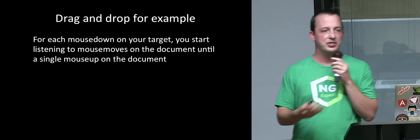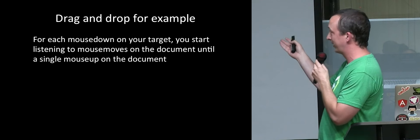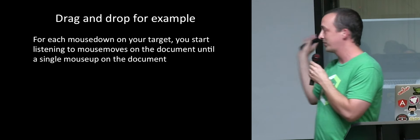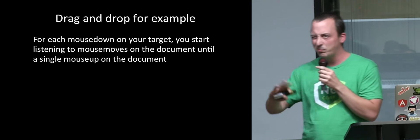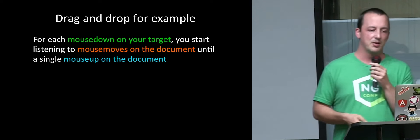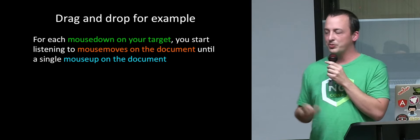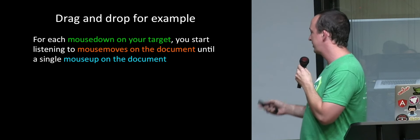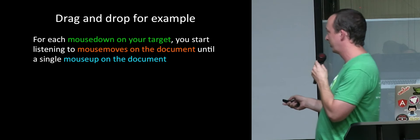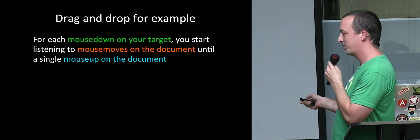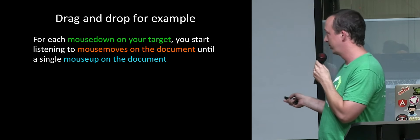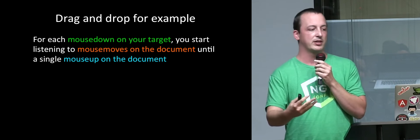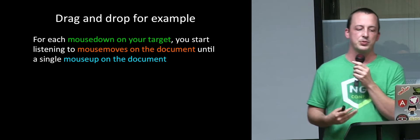So drag-and-drop: for each mouse down on your target, you start listening to mouse moves on the document until a single mouse up on the document. That's basic drag-and-drop. The first thing we can do is identify three different sets of events that we're going to compose together: mouse downs on your target, mouse moves on the document, and mouse ups on the document. Those are our three different types of events we're going to compose together.